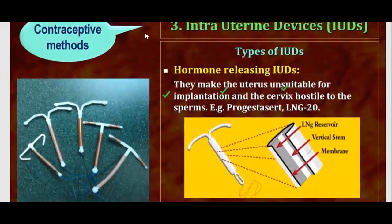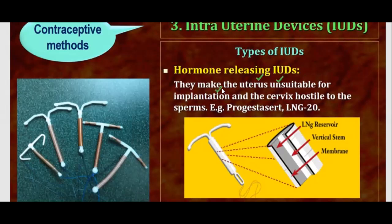Hormone-releasing IUDs make the uterus unsuitable for implantation. If the uterus is not in the right state, there will be no implantation, and pregnancy will not occur. Hormone-releasing IUDs are those that make the uterus unsuitable for implantation and the cervix hostile to the sperms. For example, Progestas-Azert and LNG-20. These hormones make the uterus unsuitable for fertilization and pregnancy.